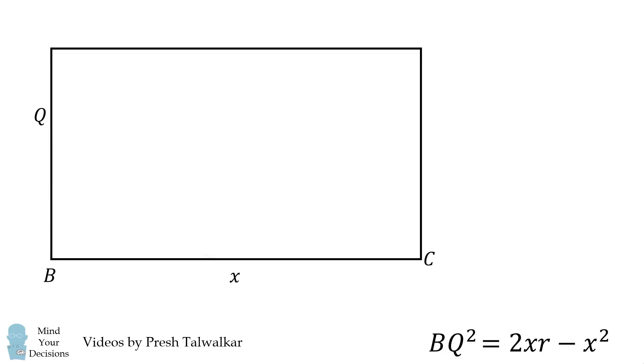We then go back to the rectangle and we consider the right triangle CBQ. We can again solve for BQ by the Pythagorean theorem. BQ squared is equal to 10 squared minus X squared.